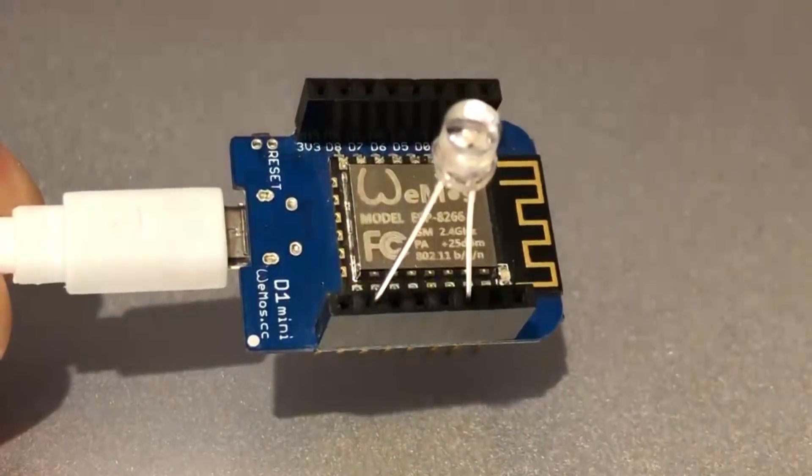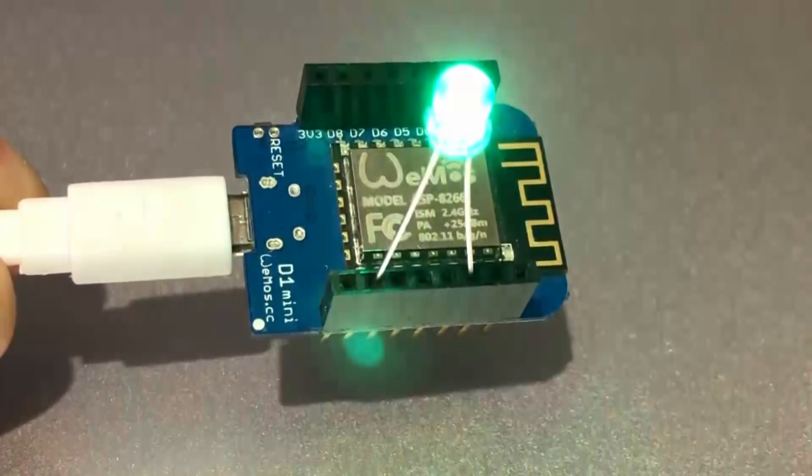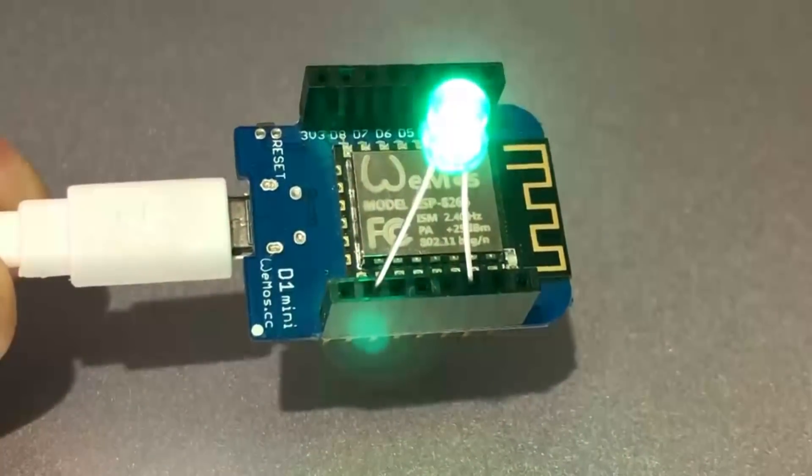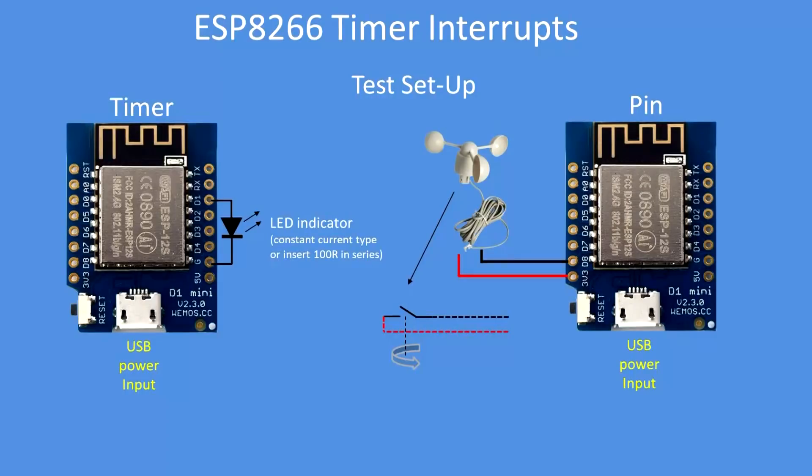Here is the interrupt running, and what it's doing is switching an LED on and off, but it's independent of the main program. Very simple test setup: an LED between pin D1 and ground.